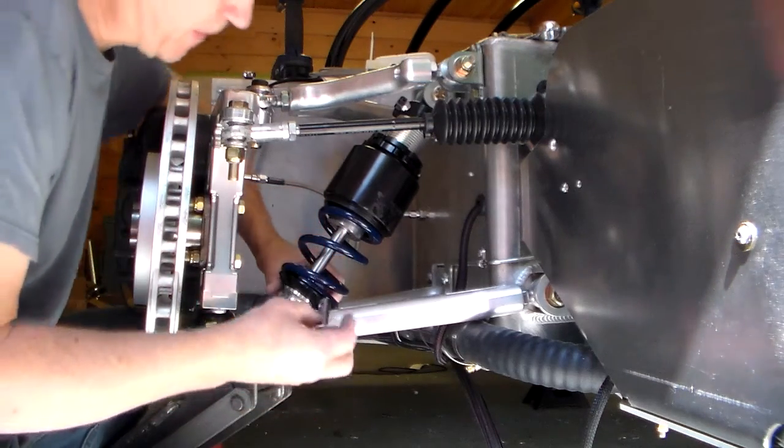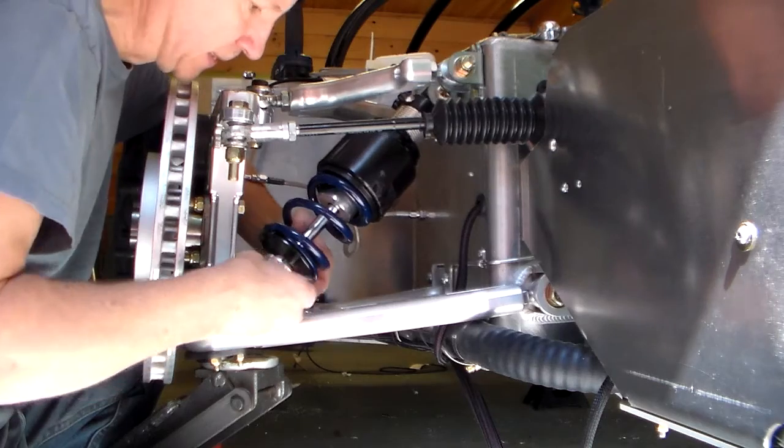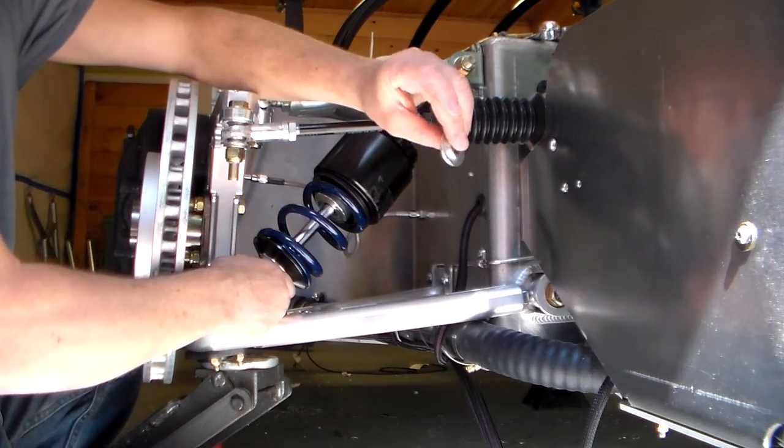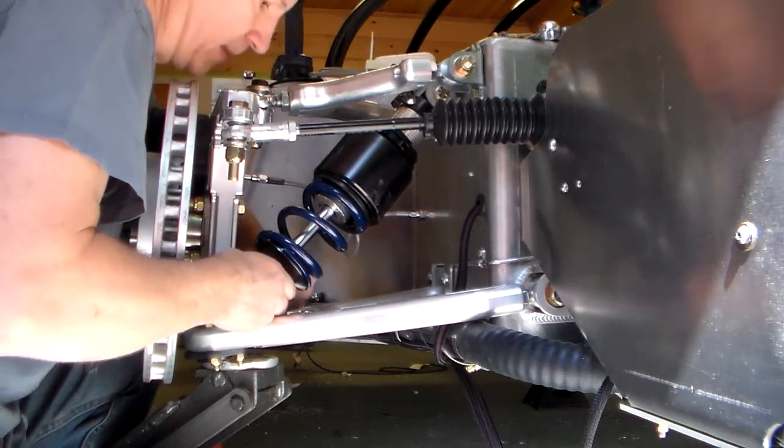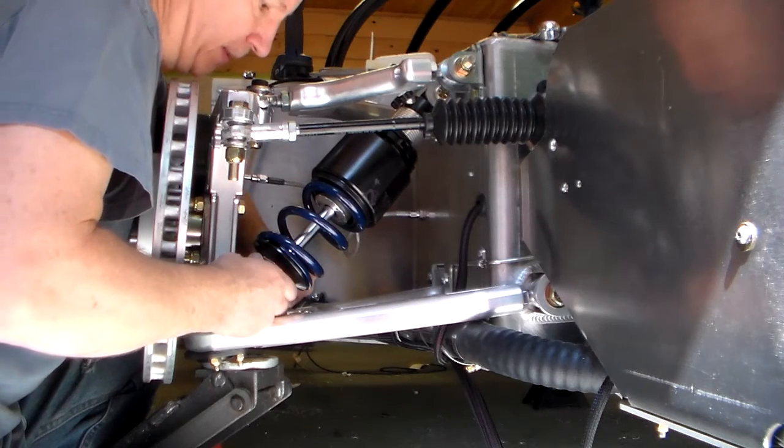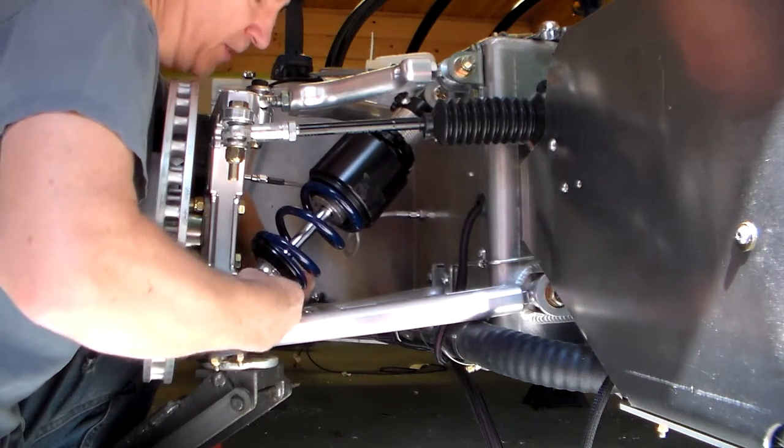So I've got the outer spacer on there already. Then I'm going to put the inner one cup and the washer on there.